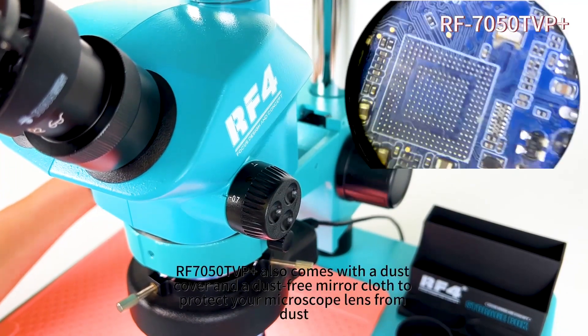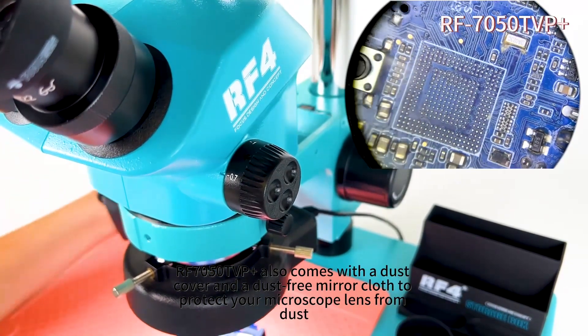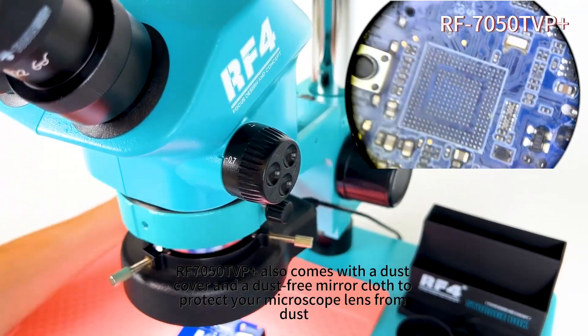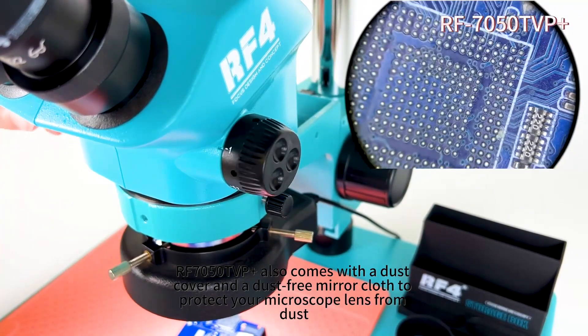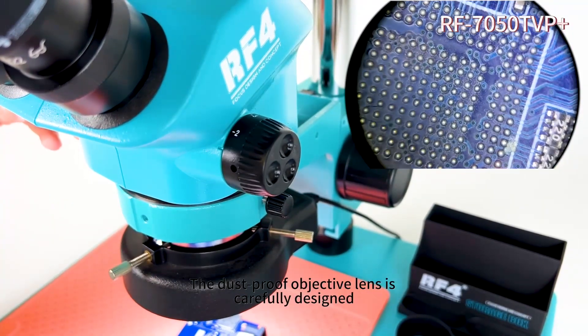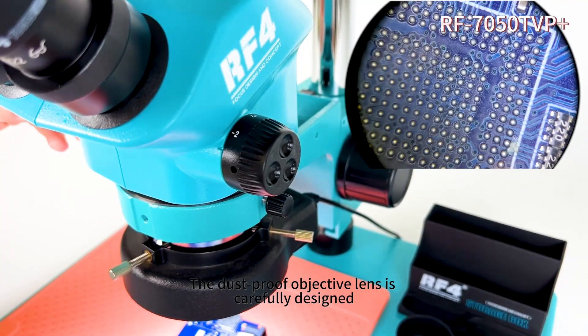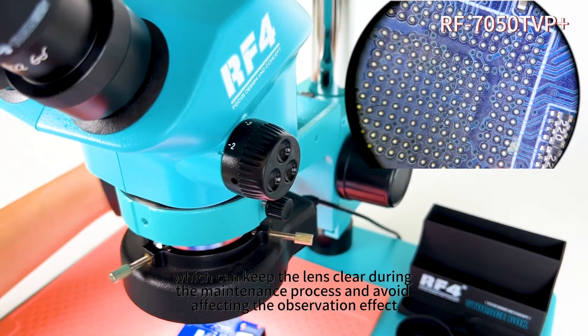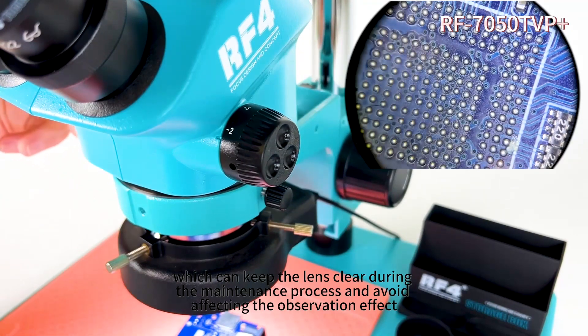Don't worry about dust. Our F7050 TVP Plus also comes with a dust cover and a dust-free mirror cloth to protect your microscope lens from dust. The dust-proof objective lens is carefully designed, which can keep the lens clear during the maintenance process and avoid affecting the observation effect.